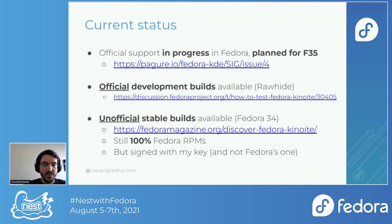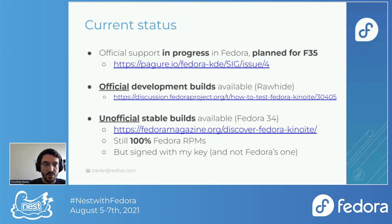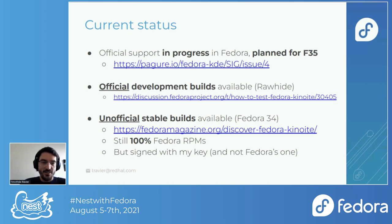The status of this project right now is that we're in full development progress. We've been accepted as a change for Fedora 35, so we'll be there when Fedora 35 gets released. Right now it's in progress. You can get official development builds that are now available in Rawhide. If you don't feel like using development Rawhide builds for your day-to-day use, you can use an unofficial build that I'm currently maintaining based on Fedora 34 packages. It's unofficial, but still 100% Fedora RPMs — the main difference is they're not signed by Fedora infra, just signed by my personal GPG key.